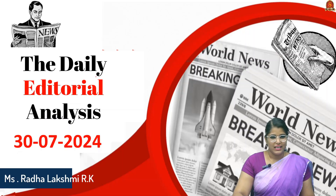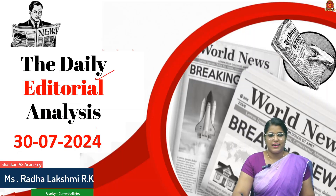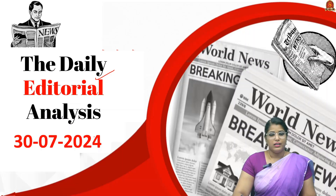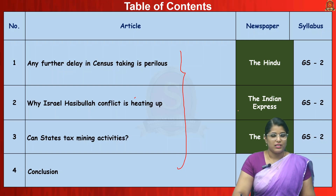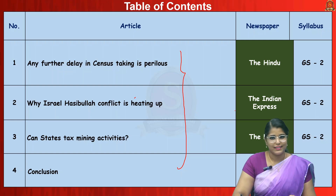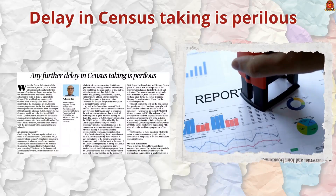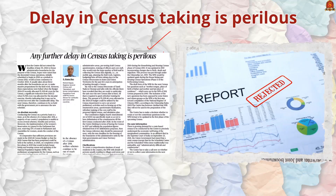Welcome to daily editorial analysis. Today's date is 30th of July 2024. We are going to discuss three editorial articles from The Hindu and Indian Express. Watch the full video and leave your comments in the comment section. Without delay, we will get into the article discussion.